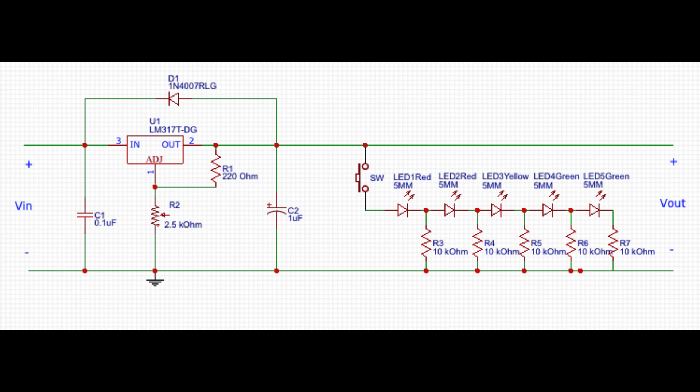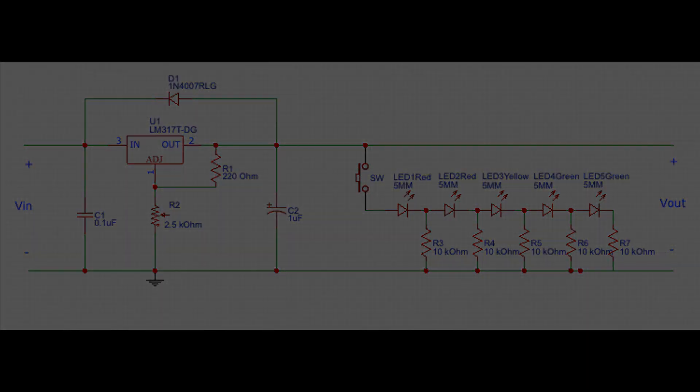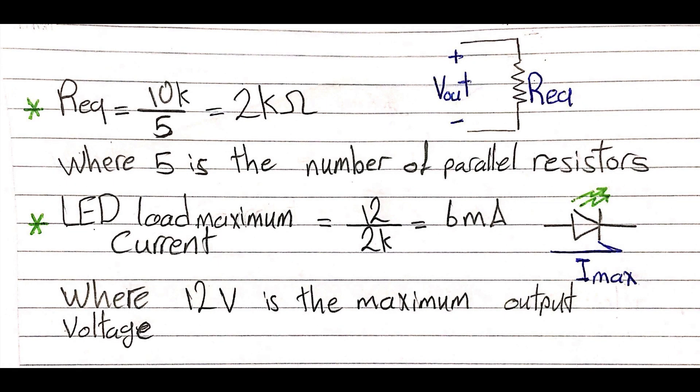A shunt 10 kilo ohm resistor is used after each LED to limit the current drawn by the voltage indicator for protection. The equivalent resistance of the voltage limit indicator circuit is 2 kilo ohm. So if the LM317 outputs 12 volts, the voltage limit indicator load will draw a current of 6 milliamps, so all my LEDs can run safely.